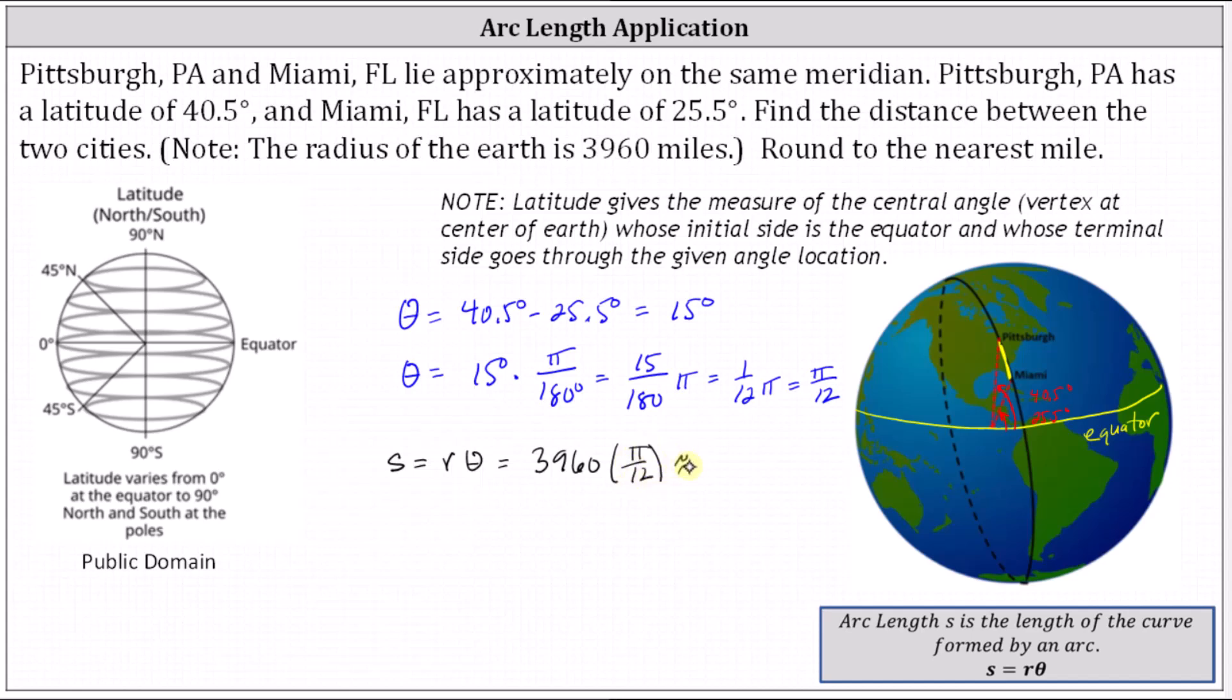This is approximately 1,036.726, and we're asked to round to the nearest mile, so the distance between Pittsburgh and Miami is approximately 1,037 miles.